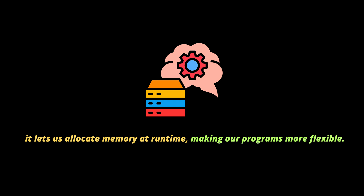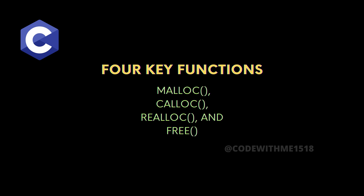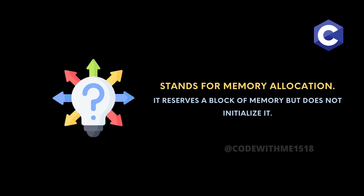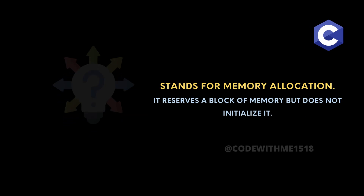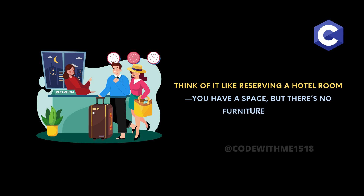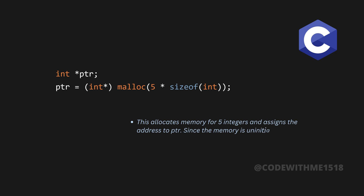Now, let's talk about the four key functions used for dynamic memory allocation in C: malloc, calloc, realloc, and free. First, malloc, which stands for memory allocation. It reserves a block of memory but does not initialize it. Think of it like reserving a hotel room — you have a space, but there's no furniture inside. Here's an example: int *ptr = malloc(5 * sizeof(int)). This allocates memory for five integers and assigns the address to ptr. Since the memory is uninitialized, it may contain garbage values.